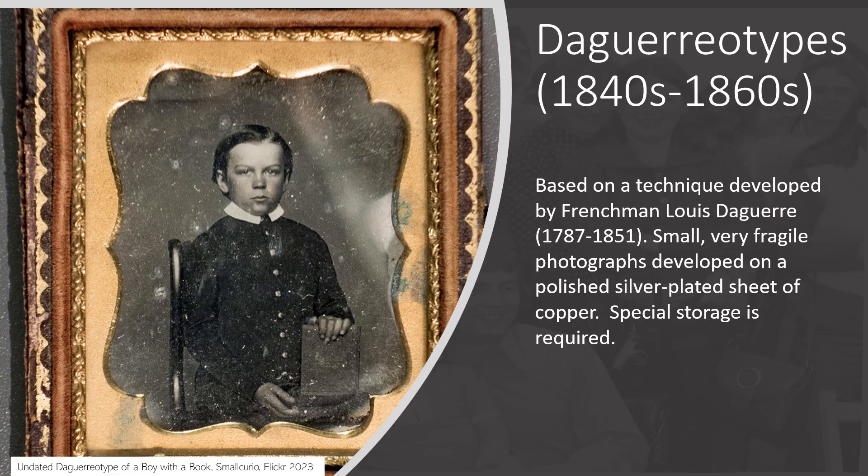The daguerreotype is an early photographic process invented by French artist and inventor Louis Daguerre in the 1830s. It was the first practical method for creating permanent images with a camera and was widely used in the 19th century. A daguerreotype photograph is highly detailed and finely crafted on a polished silver-coated copper plate, known for exceptional detail, clarity, and the unique way it captures the texture of the subject. However, the process was quite labor-intensive and required specialized equipment.